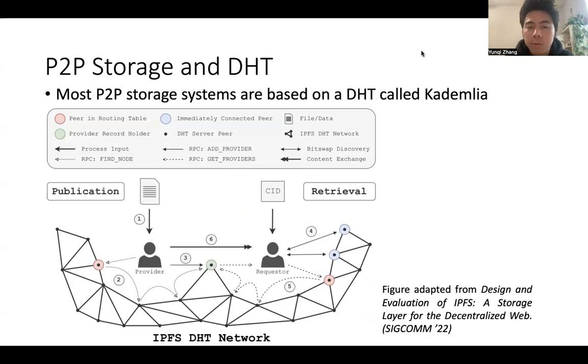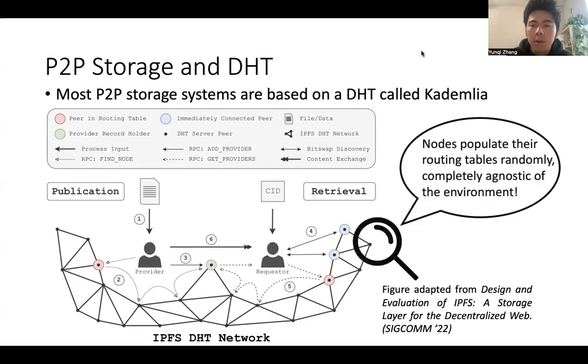If someone wants to request this file, they use the content identifier to locate the nodes that store this file. There is an issue with this kind of DHT network. That is, nodes have a limited routing table, and they populate their routing tables randomly, completely agnostic of the environment.